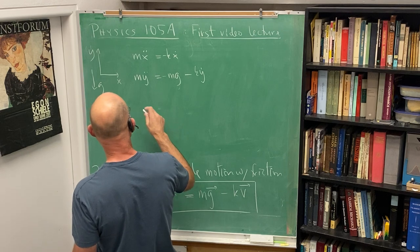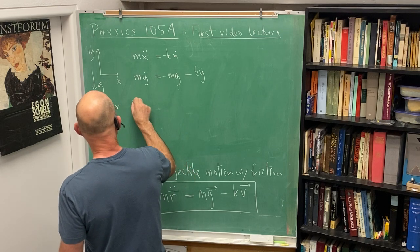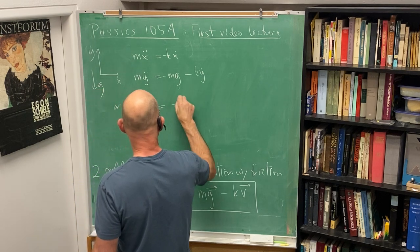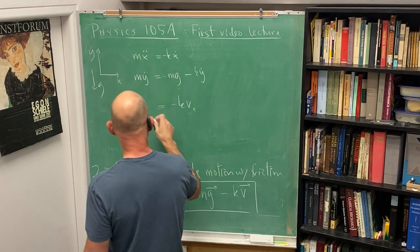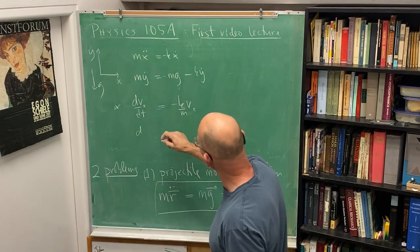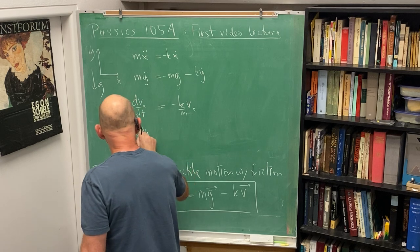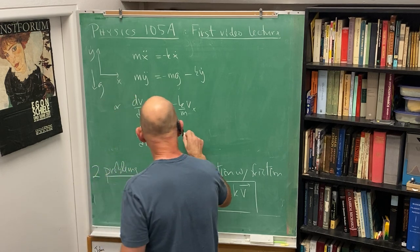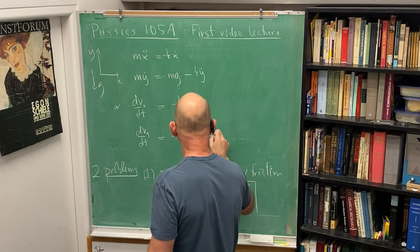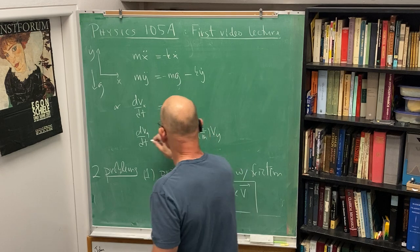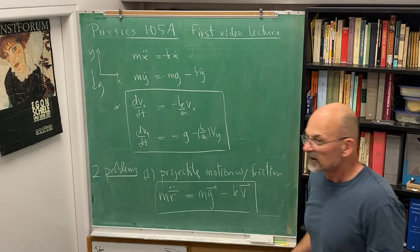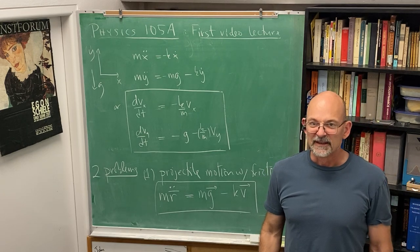And these can be simplified when we want to actually work on them. So we could have dvx/dt equals minus k over m times vx. And dvy/dt equals minus g minus k over m times vy. There's our set that we're going to integrate.